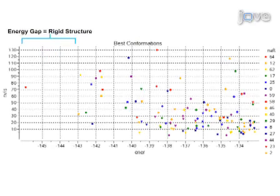Results are obtained that show a preference for a rigid beta strand at positions 12 to 14 of the V3 loop, based on secondary structure preference and energy distribution of the stack of searched conformations.